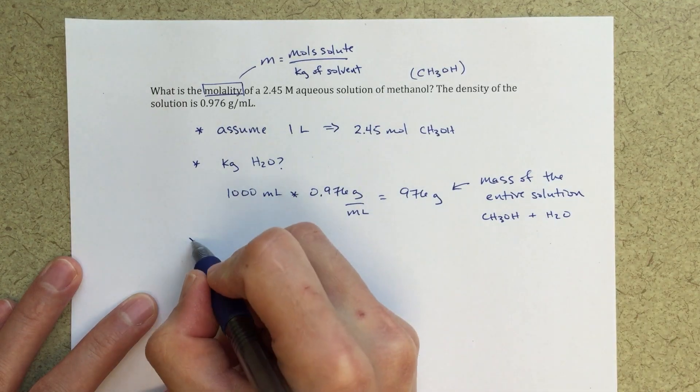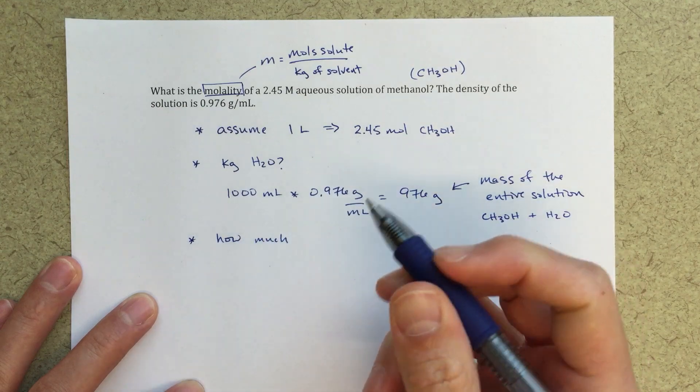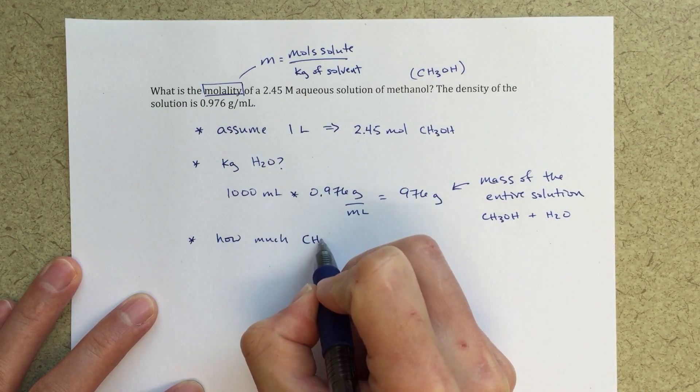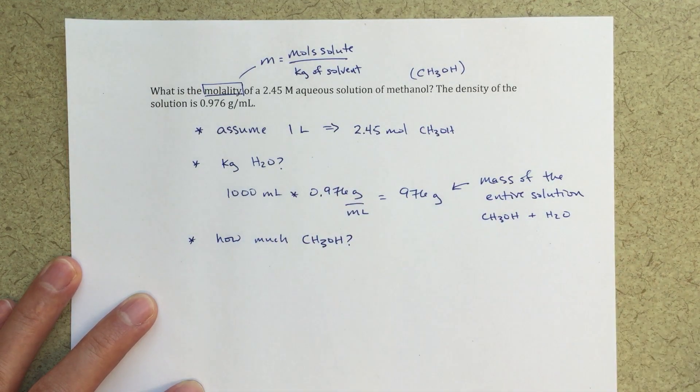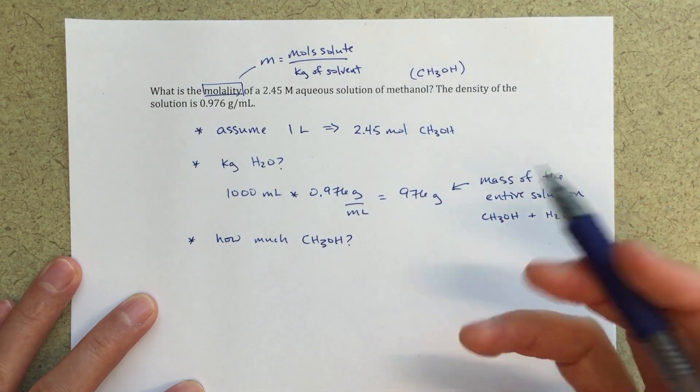So next thing I need to do is then figure out what mass is probably a better way to say that - CH3OH. So if I have 2.45 moles of CH3OH in my solution, right, I'm assuming one liter, then I can figure out how many grams of methanol.